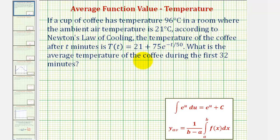To find the average temperature over the first 32 minutes, we want to find the average function value over the closed interval from zero to 32. Therefore, we can use the average value formula given below, where the average function value Y sub AV is equal to one divided by the quantity B minus A times the integral of f(x) from A to B.